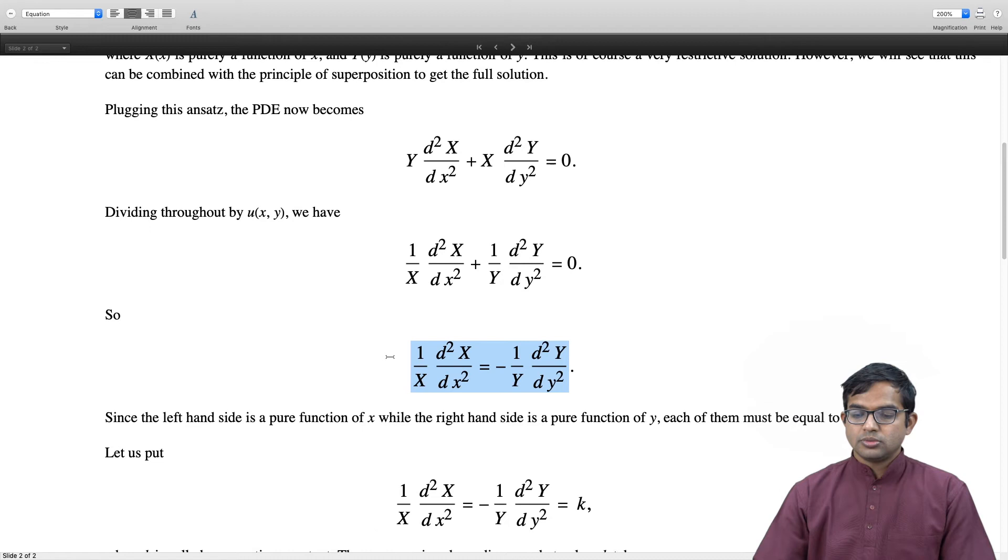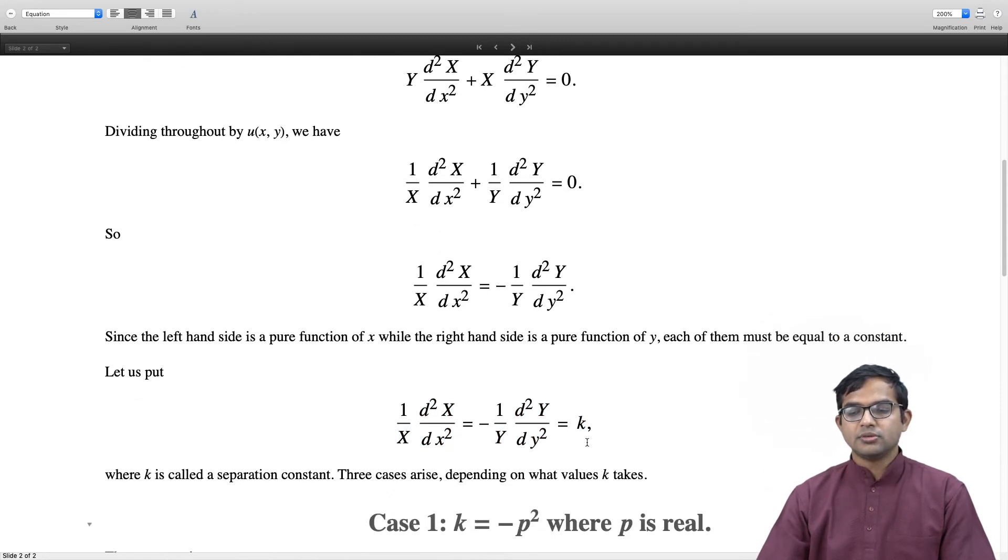How we choose this constant gives us different kinds of solutions. That is where the boundary conditions will come in. At this general level, we can break this down into three different kinds of solutions by equating to some constant k.